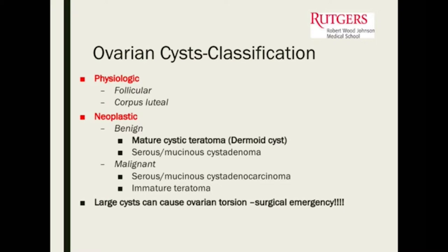We worry about ovarian cysts in a few cases. One is if they're large — cysts that become large are the ones that tend to torse. Normal-sized ovaries with small cysts don't tend to torse. This is important to remember, because we do get referrals for a primary care order of pelvic ultrasound showing a one-centimeter cyst. That ovary is not torsing, or very unlikely to be a concern for torsion.